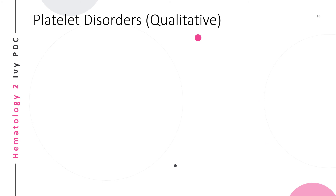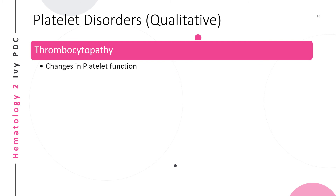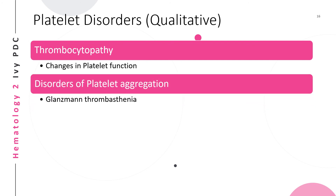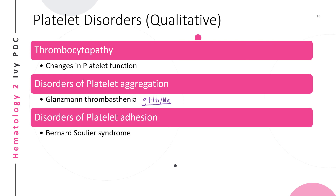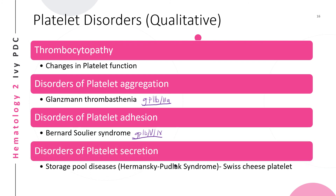The last category is qualitative platelet disorder, or thrombocytopathy, which refers to a change in platelet function. One function of platelets is aggregation; an example of a disorder of platelet aggregation is Glanzmann's thrombasthenia, where there is a defect in the surface receptor GP2b3a (glycoprotein 2b3a). Another function is adhesion; an example of a disorder of platelet adhesion is Bernard-Soulier syndrome, where there is a defect in the platelet glycoprotein complex GP1b-5-9.